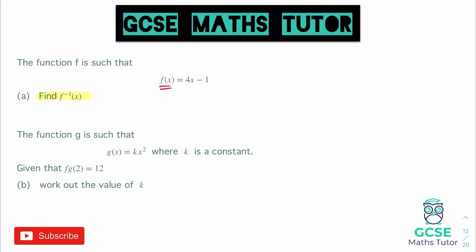And remember if you're not too sure with inverse functions to check the link in the description. But if we write it as y equals, so we have y = 4x - 1, all I actually need to do is make x the subject. So there's two steps in order to do that.